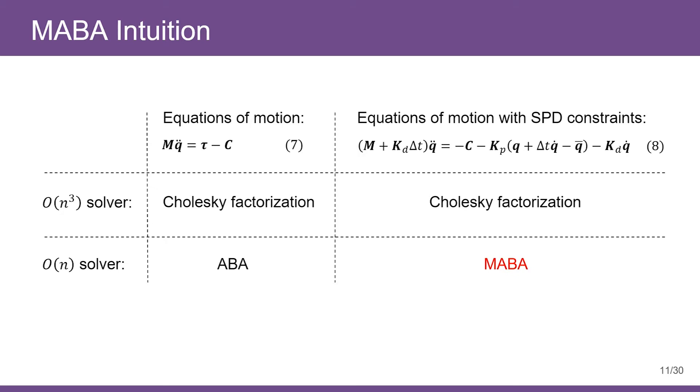The efficiency of ABA and MABA comes from the use of recurrence relations, where the n-by-n closed form equations of motion is never explicitly solved.